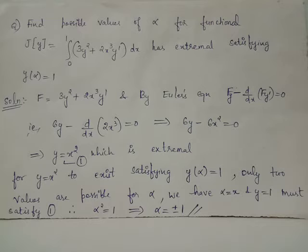The partial derivative of F with respect to y, treating y' and x as constants, is obtained as Fy = 6y. The partial derivative of F with respect to y', treating y and x as constants, is obtained as Fy' = 2x³.